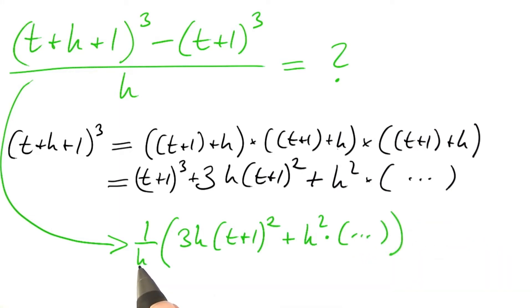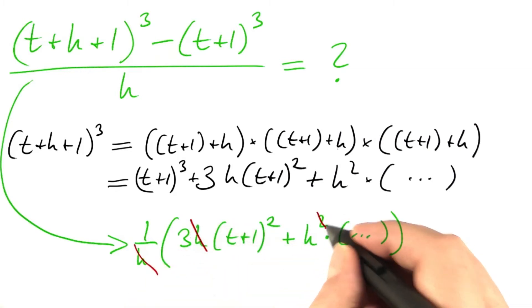And look what happens. We divide by h, h divided by h cancels, h square divided by h becomes h.